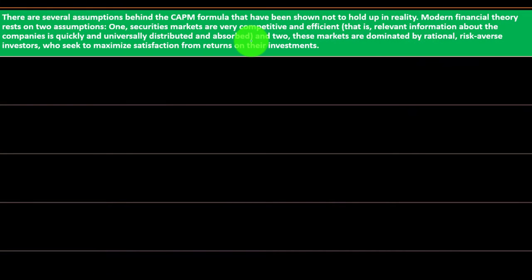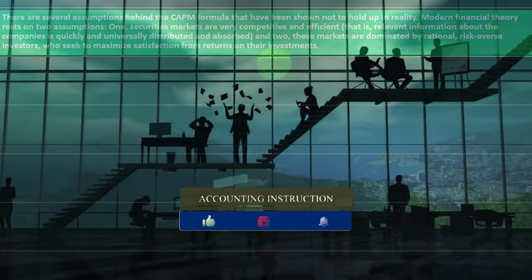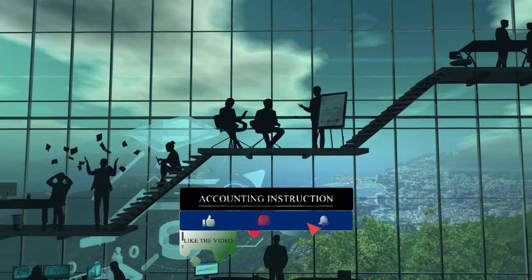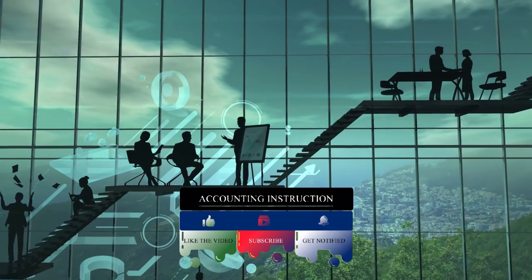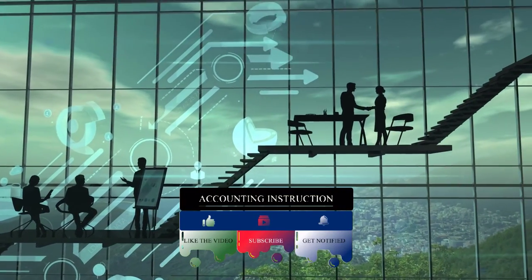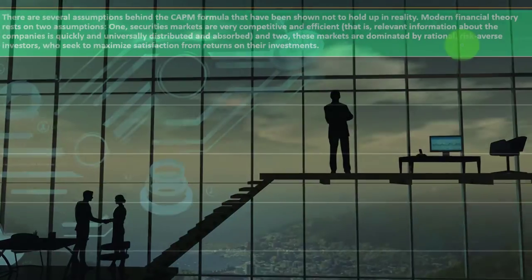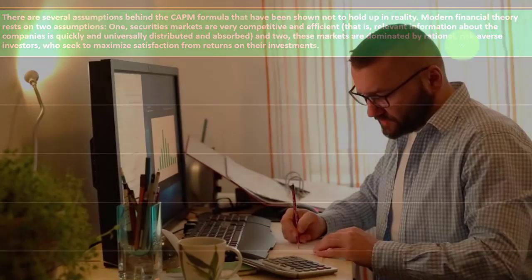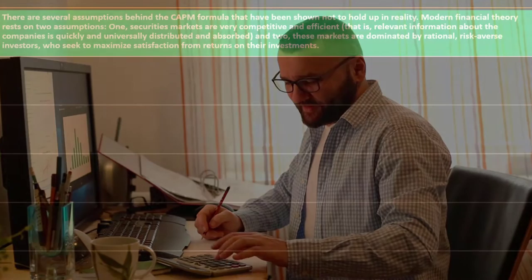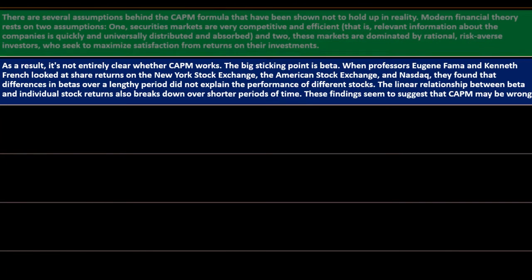The second assumption is that markets are dominated by rational, risk-averse investors who seek to maximize satisfaction from returns on their investments. A classical economic model assumes rational people have all the information needed to make relevant decisions, which is why markets drive toward equilibrium. Others argue that many people are emotional in their decision-making, so although markets are still more efficient than alternatives, they may not always reflect exact underlying values.